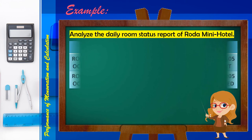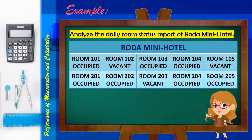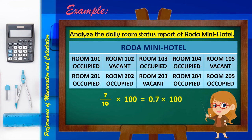Another example: let us analyze the daily room status report of RODO Mini Hotel. The hotel has a total of 10 rooms and 7 are occupied. Using the formula: 7 divided by 10 times 100 equals 0.7 times 100, which equals 70%. Therefore, the Room Occupancy Percentage (ROP) of RODO Mini Hotel is 70%.